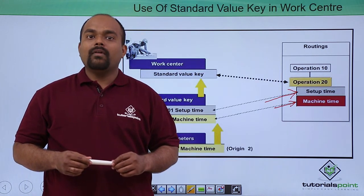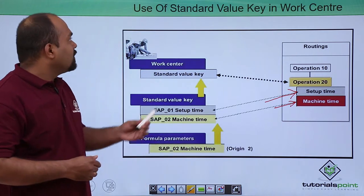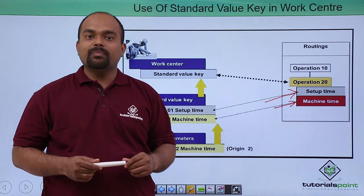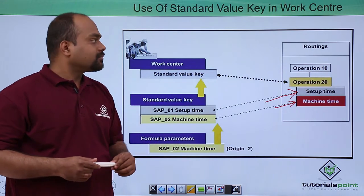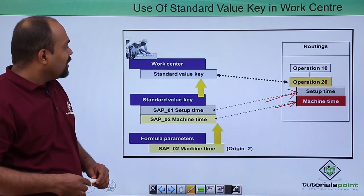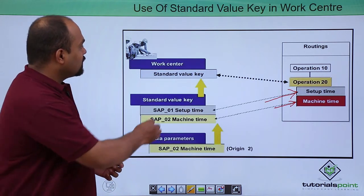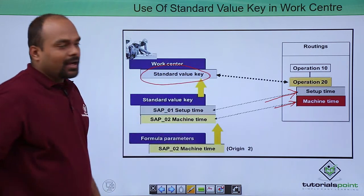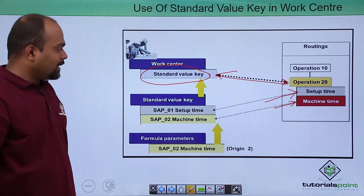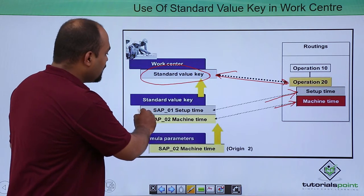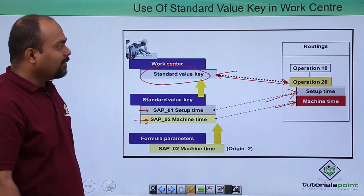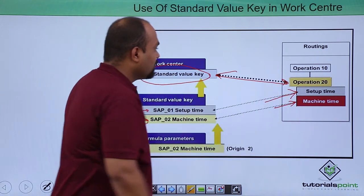So all these values will be put in a standard value key, and that standard value key is most important in a work center. As shown in this image, there is one standard value key used for a particular operation — operation number 20. SAP 01 and SAP 02 are standard value keys for setup time and machine time, given under operation 220.